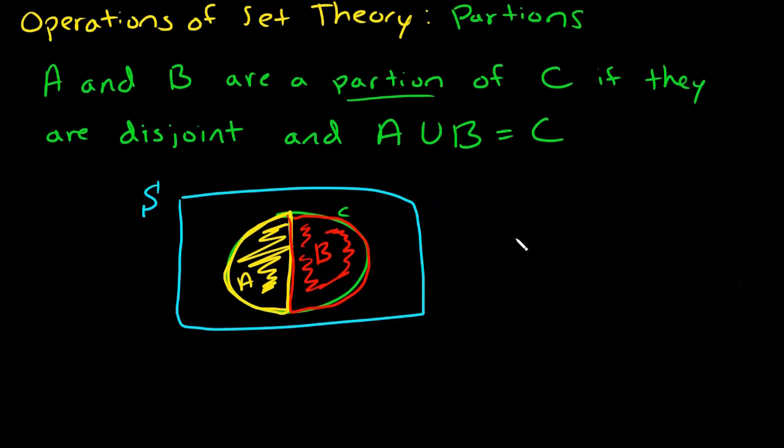Of course you can partition into more than two pieces, but the idea is that each piece needs to be disjoint, so there's no overlap in the pieces in order to be a partition. And if you take the union of all the different pieces, it must equal the total.